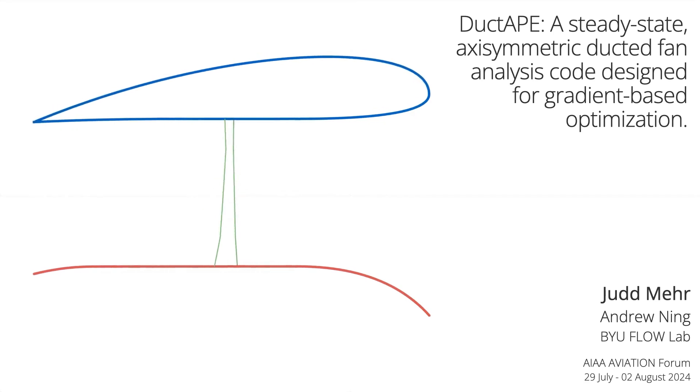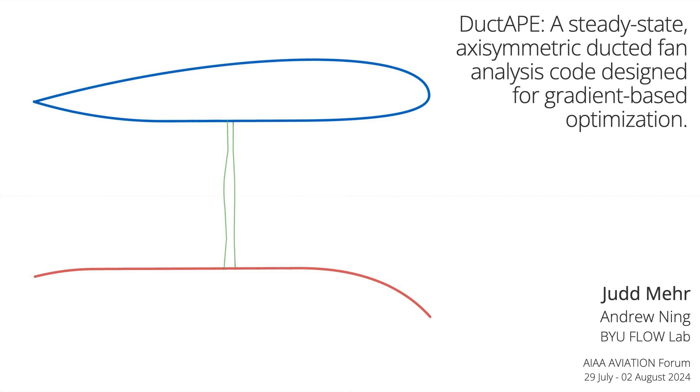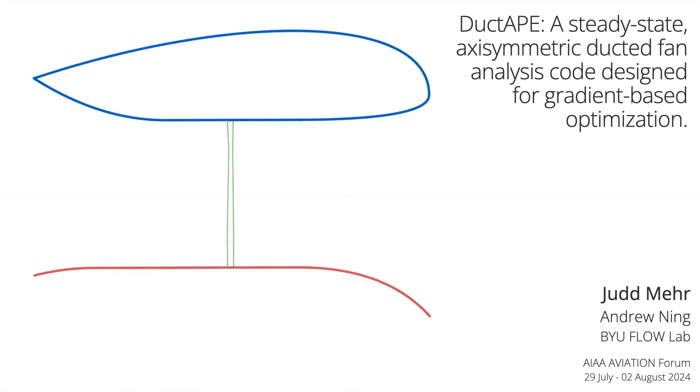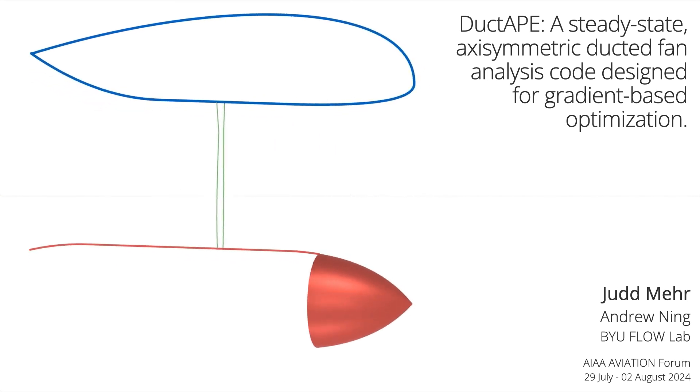This is a recorded approximation of the presentations given on July 29th and August 1st at the 2024 AIAA Aviation Forum for the paper Duct Tape, a Steady-State Axisymmetric Ducted Fan Analysis Code Designed for Gradient-Based Optimization.